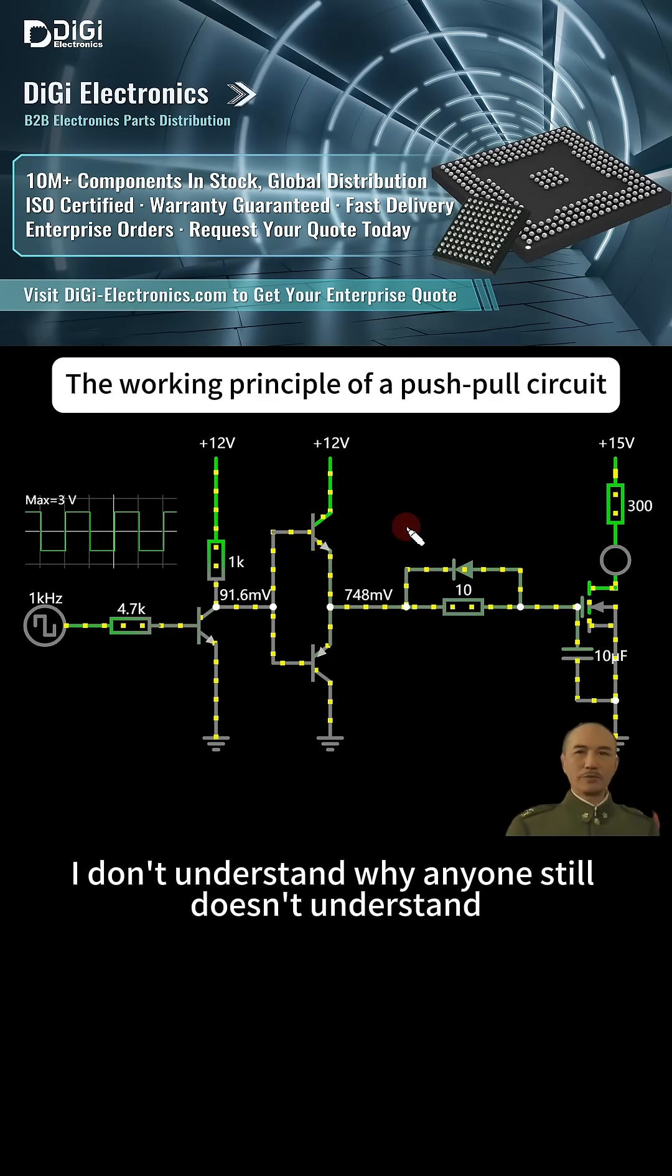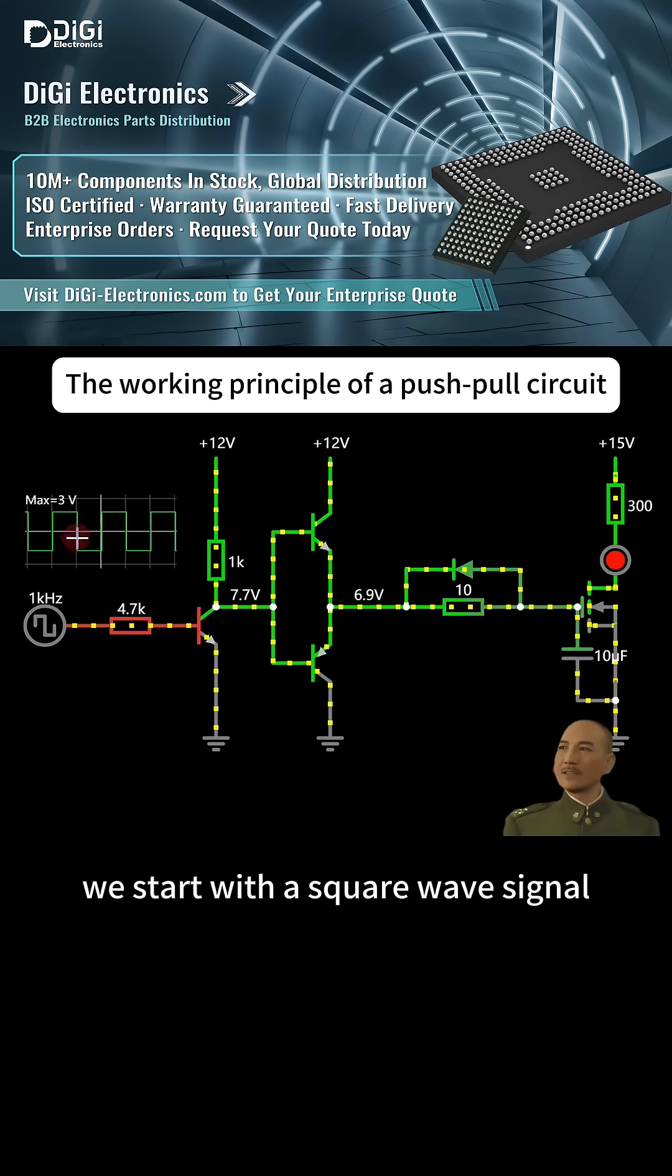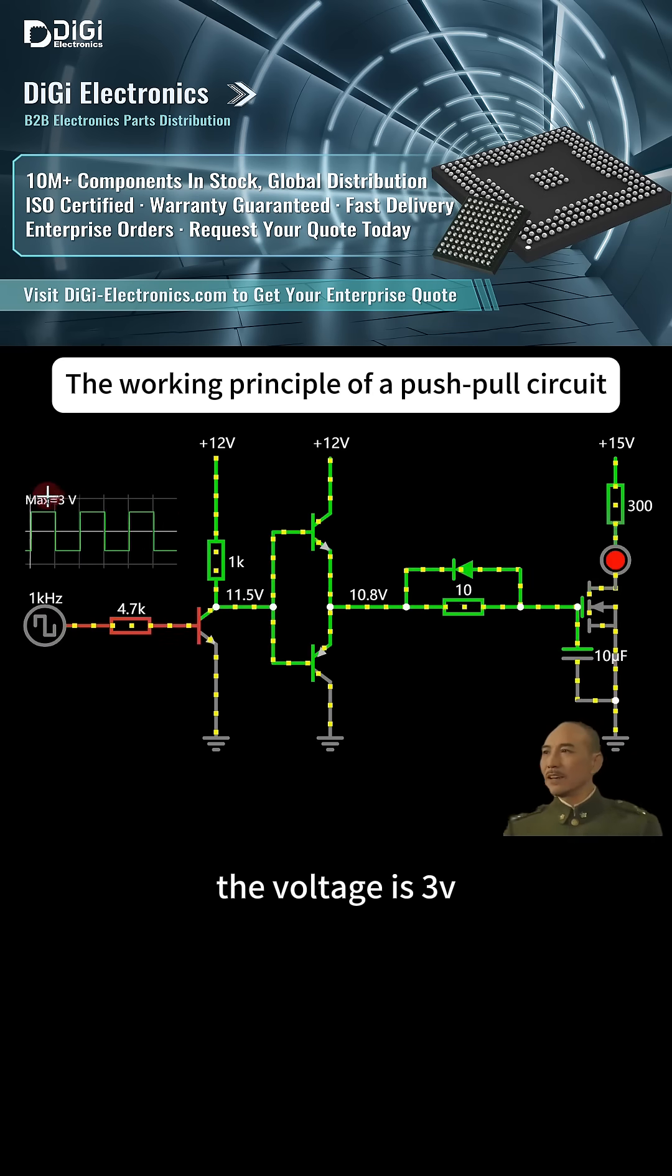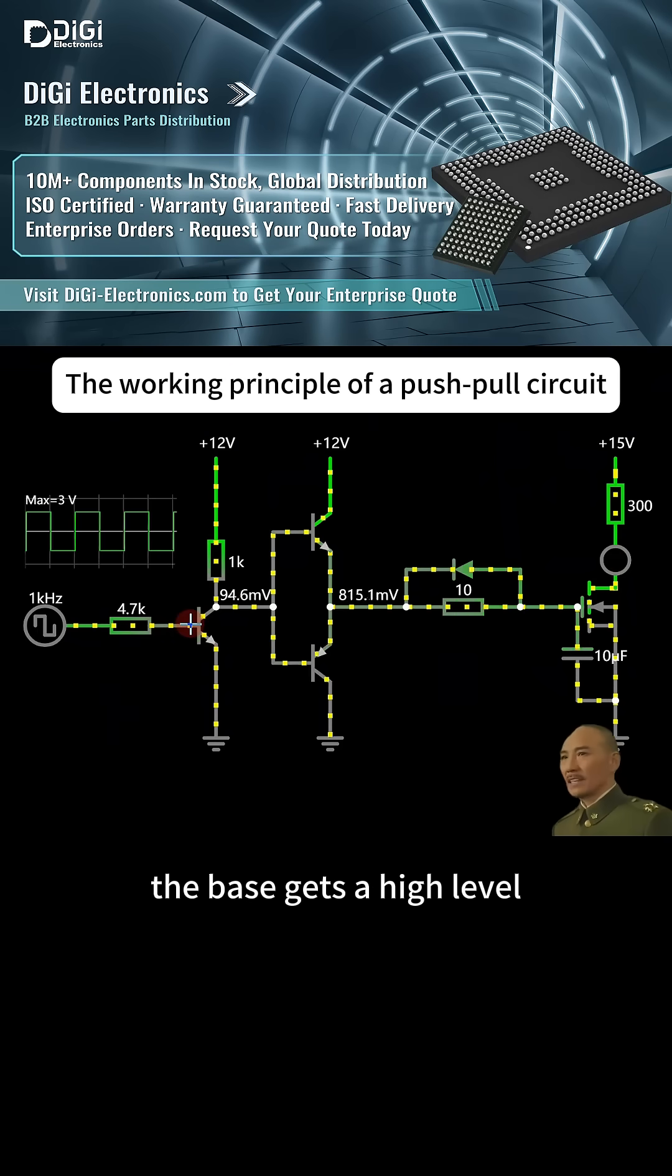I don't understand why anyone still doesn't understand push-pull circuits. I'll repeat that circuit again today. We start with a square wave signal. The voltage is 3V through current-limiting resistance to the base of the transistor.